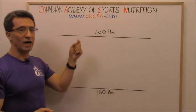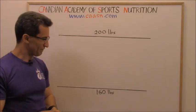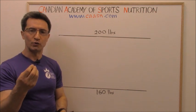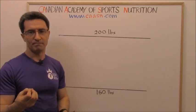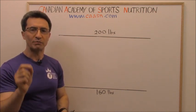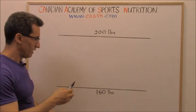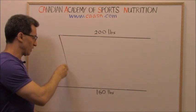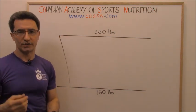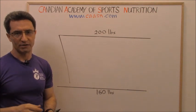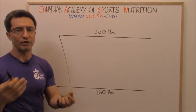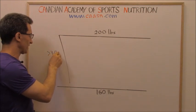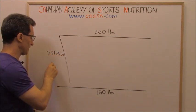Let's say you are 200 pounds and you want to get down to 160 pounds — you are planning to lose 40 pounds. I'm going to show you what might happen throughout your journey. Some people lose weight very quickly. We call it quick weight loss or rapid weight loss, sometimes called sharp weight loss. If you are losing more than three pounds per week, we call it rapid weight loss.